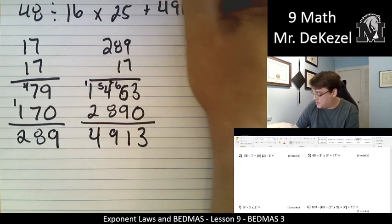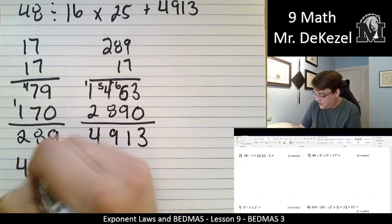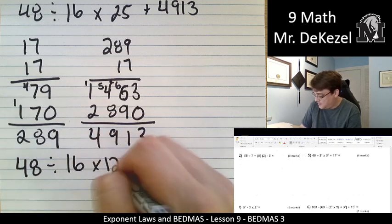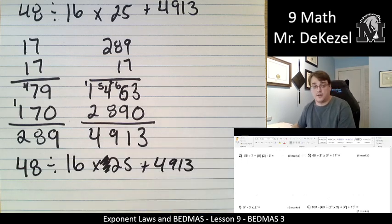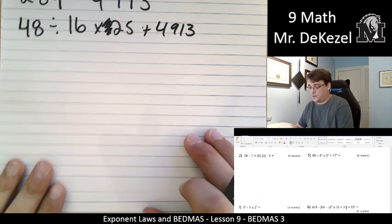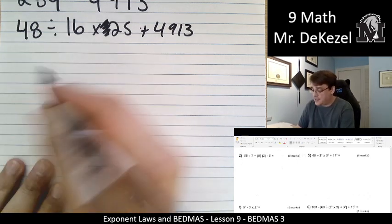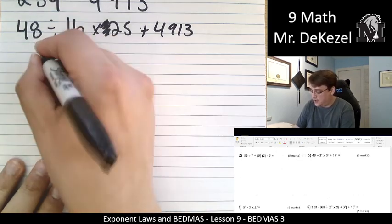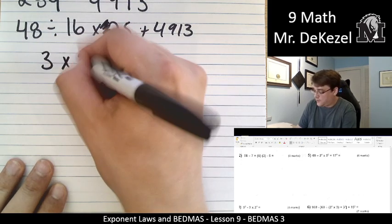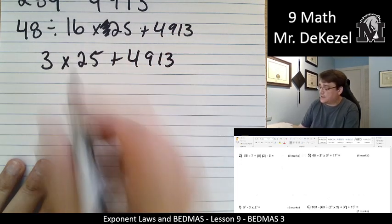So that is not the final answer, that's just part of our equation. So I'm going to rewrite this down here and we're going to continue. 48 divided by 16 multiplied by 25 plus 4,913. Now we're going to do multiplication and division from left to right because we have no more brackets and no more exponents. So 48 divided by 16 is 3, multiplied by 25 plus 4,913.